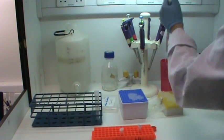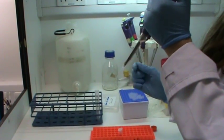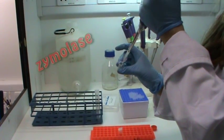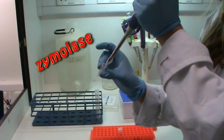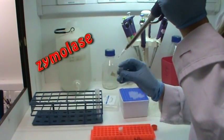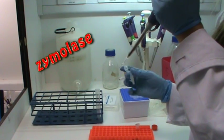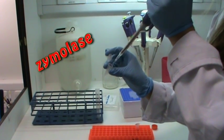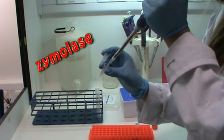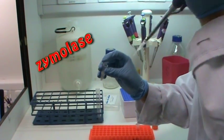To break down the cell wall I am adding the enzyme zymolase. The enzyme zymolase works best at 37 degrees Celsius.